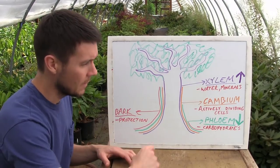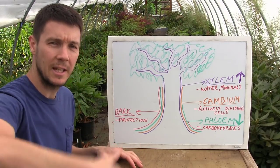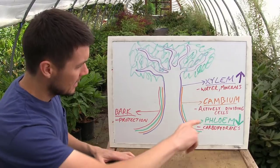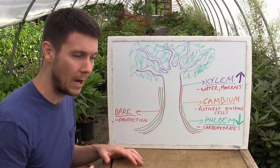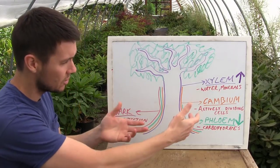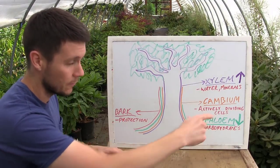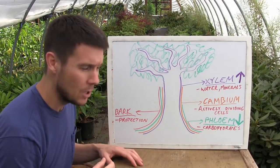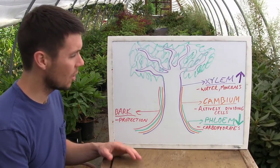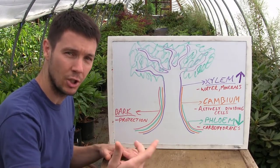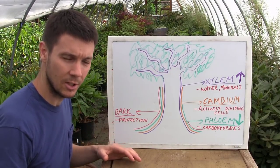We've got the bark, which is the outer layer and protection for the tree. We've got the xylem, which is a layer that transports nutrients, minerals, and water up to the leaves so they can grow. Then we've got the cambium — the actively dividing cell layer — which contains all the undifferentiated cells that can turn into the different components the tree needs, like roots, leaves, xylem, or phloem. Then we've got the phloem, which is used to transport carbohydrates down to the roots. The leaves use photosynthesis to make sugars, and the phloem transports those sugars down to the roots.